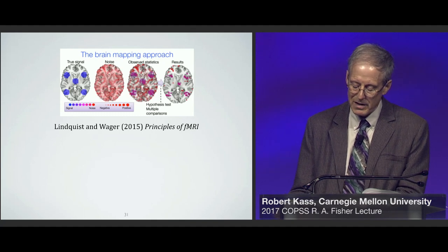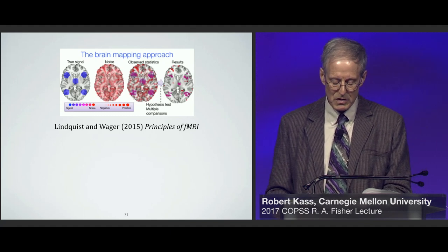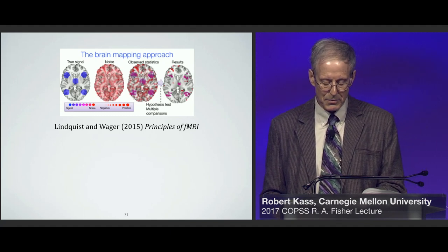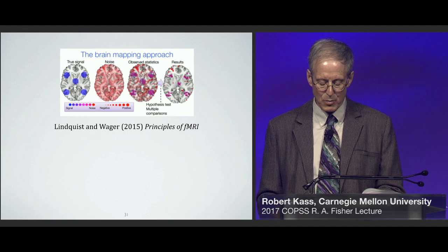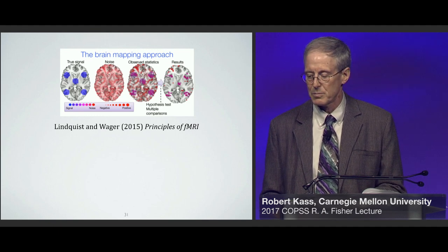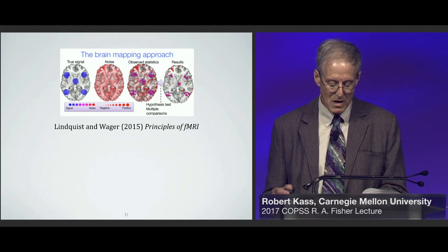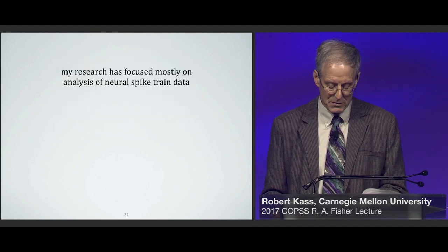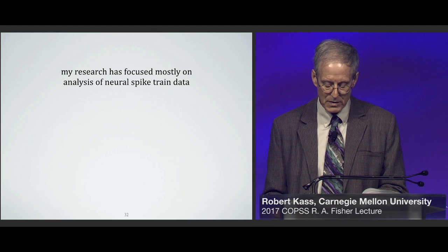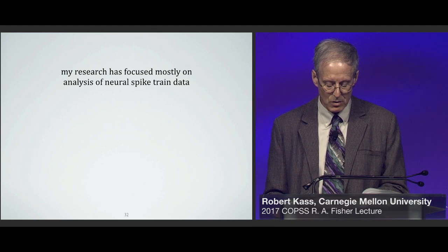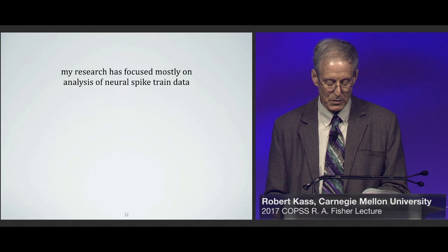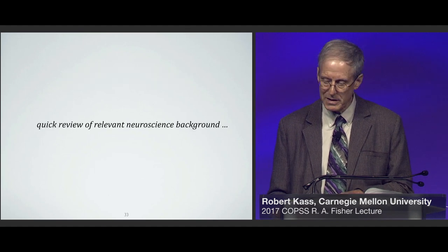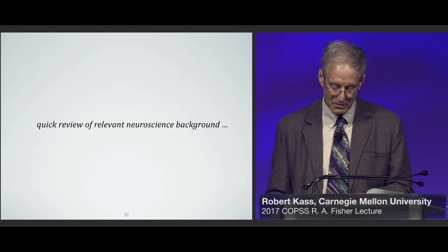Most people outside of neuroscience are exposed to it mainly through fMRI studies, which often show pictures of brain activity under particular experimental conditions. But my own research has focused mostly on analysis of neural spike train data, which is the kind of data that appear in the examples I'll go through today. So I need to give you some background.